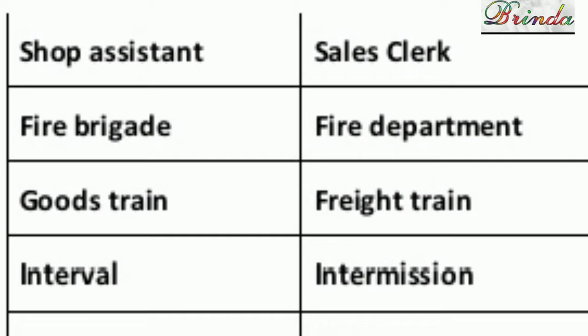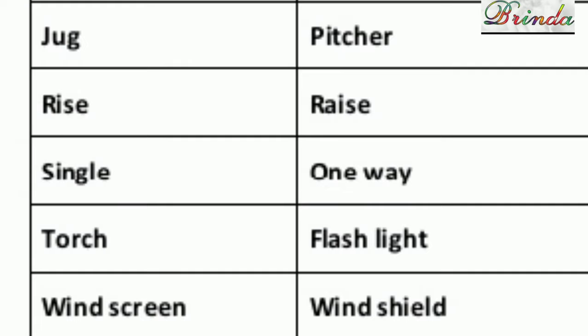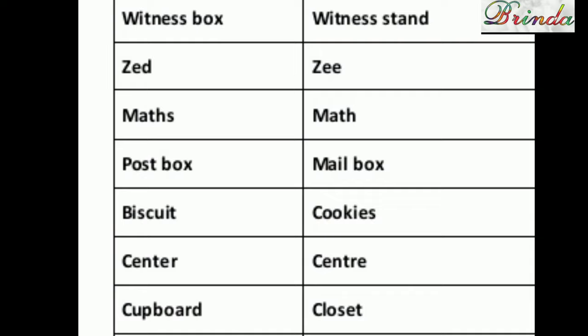Interval is British English; intermission is American English — used for the middle break of a movie. Jug is British English; pitcher is American English. Rise — R-I-S-E — is British English; raise — R-A-I-S-E — is American English. Single is British English; one way is American English. Torch versus flashlight. Windscreen is British English; windshield is American English. Witness box is British English; witness stand is American English.